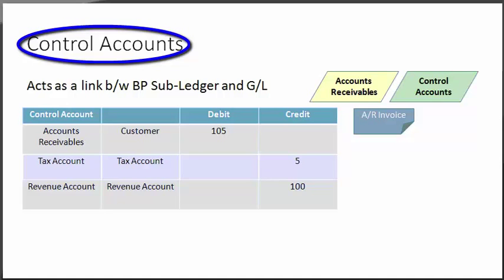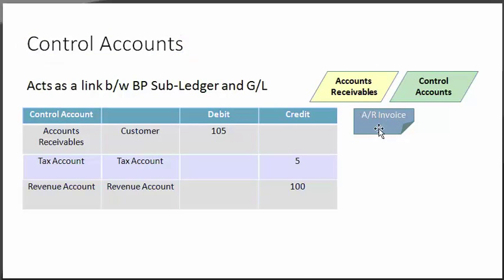Control accounts act as a link between the business partner sub-ledger and the GL. In the GL account determination window you also define the control accounts: accounts receivable for the sales process and accounts payable for the purchasing process. A control account links the business partner sub-ledger accounts to the general ledger. You need to define a general ledger account as a control account in the chart of accounts. Whenever you post a document to a business partner, the system automatically registers the general entry to the business partner master data, account balance, and the control account balance. You cannot post general entries directly to a control account. In an AR invoice, for example, when the customer is debited, the accounts receivable account is also debited. The general entry appears in both account balances: the customer and the control account.